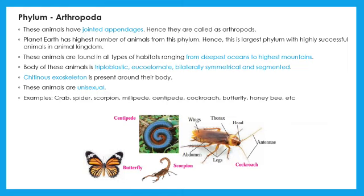Pakistan and Somalia have recently declared locust emergencies. In India, five states — Rajasthan, Punjab, Gujarat, Maharashtra, and Madhya Pradesh — are affected by locusts.